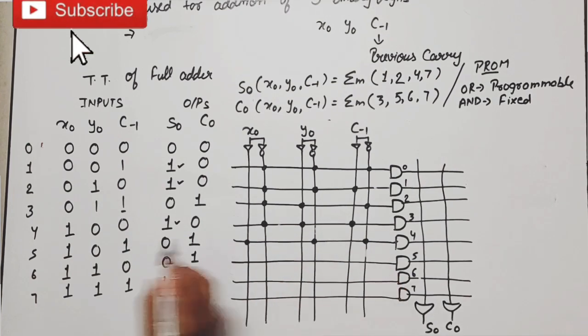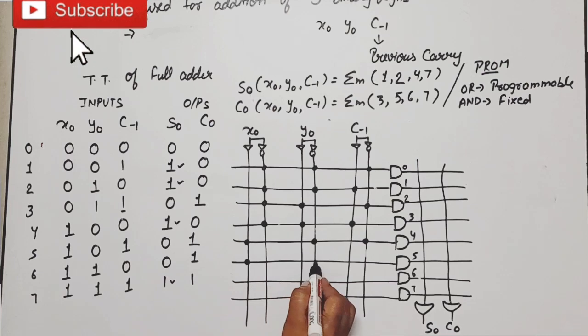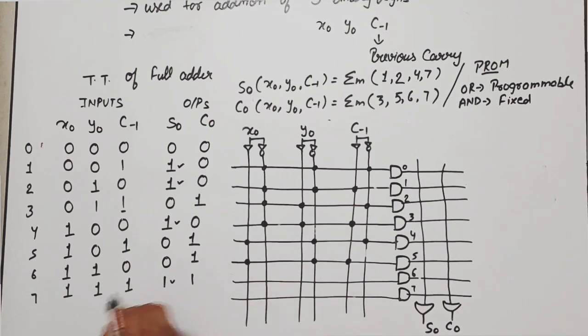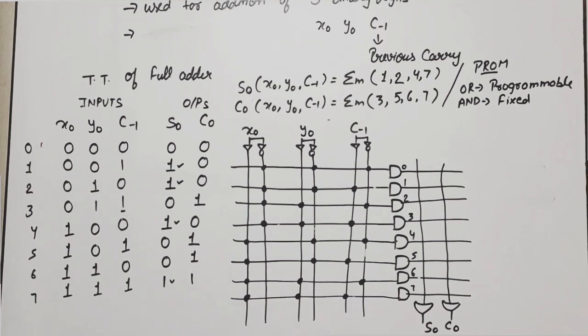For 4, what is 1, 0, 0. For 5, 1, 0, 1. For 6, 1, 1, and 0. For 7, triple 1, means 1, 1, and 1.